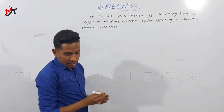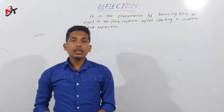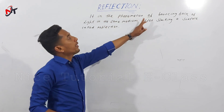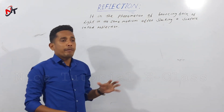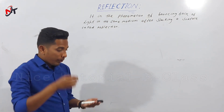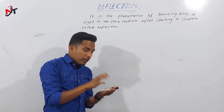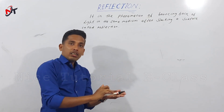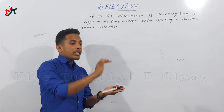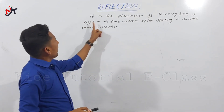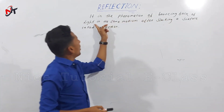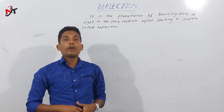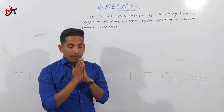What does it mean? Reflection. It is the phenomenon of bouncing back of light. The rays of light came out, struck a plane mirror, and returned back into the same medium. So, that is reflection.